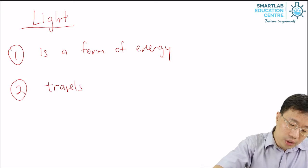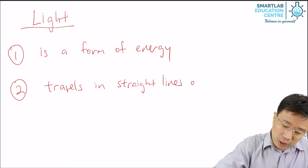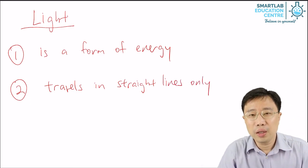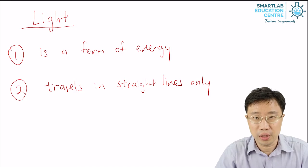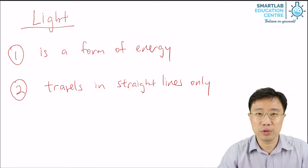Light travels in straight lines only. Light doesn't bend for no reason. It doesn't curve for no reason. It travels only straight in one single direction.